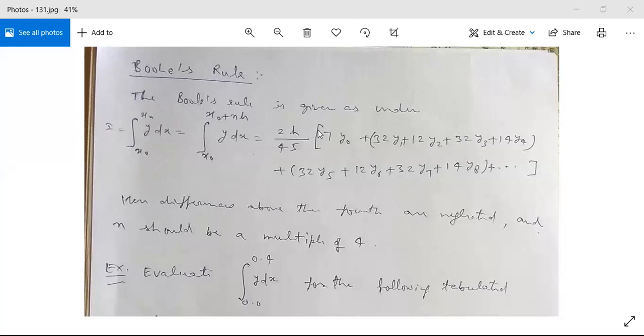This is equal to 2h/45 within bracket: 7y₀ plus 32y₁ plus 12y₂ plus 32y₃ plus 14y₄ plus 32y₅ plus 12y₆ plus 32y₇ plus 14y₈. The series is 32, 12, 32, 14, differences above the fourth are neglected.